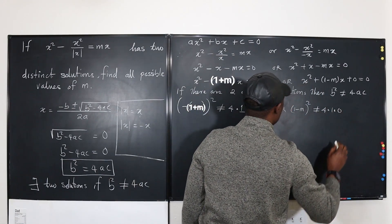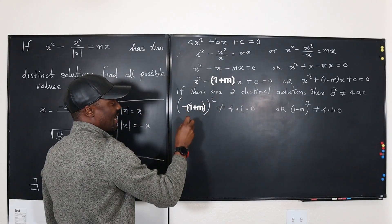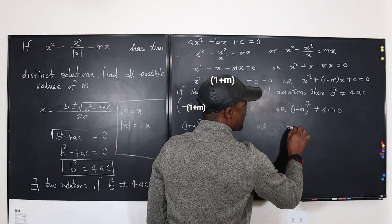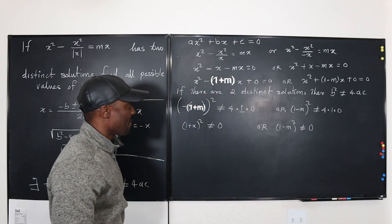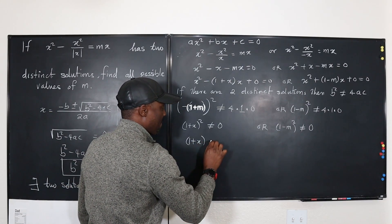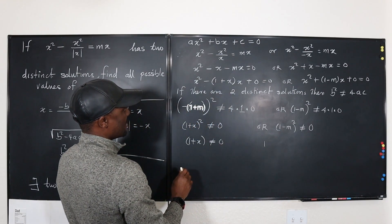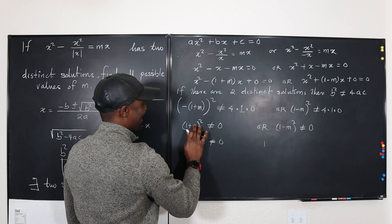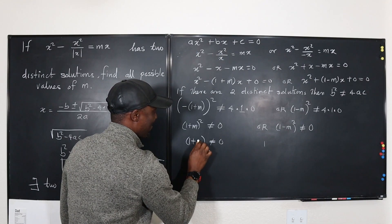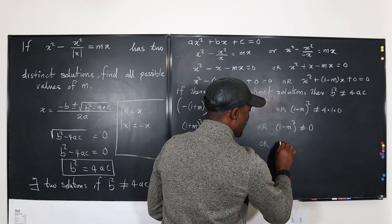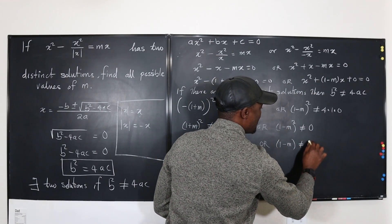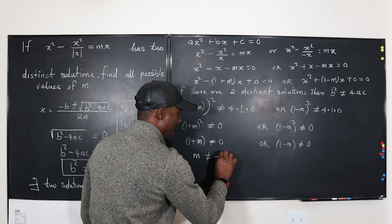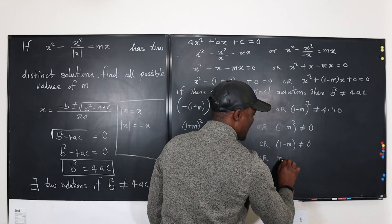Since c equals zero in both cases, 4ac equals zero. So we need (1 plus m) squared not equal to zero, and (1 minus m) squared not equal to zero. Taking the square root of both sides: 1 plus m is not equal to zero, and 1 minus m is not equal to zero. Therefore m is not equal to negative 1, and m is not equal to 1.